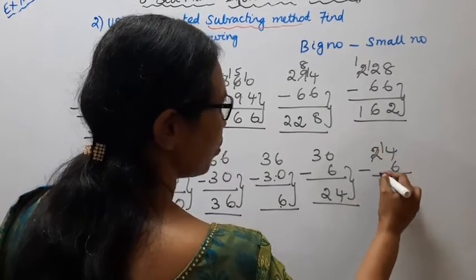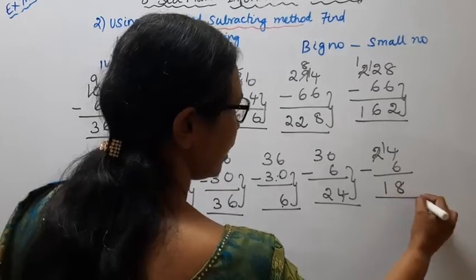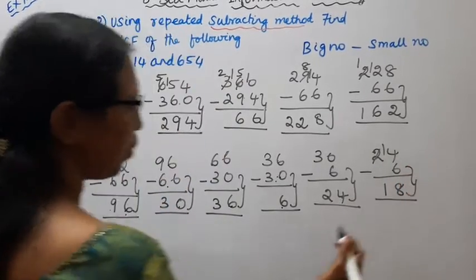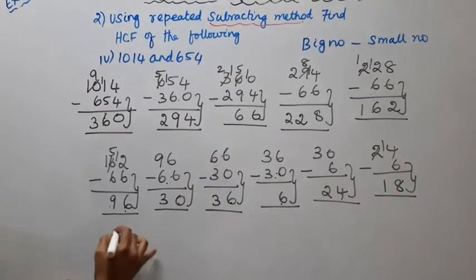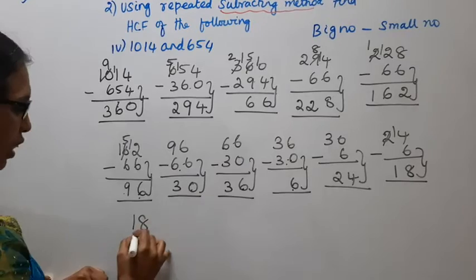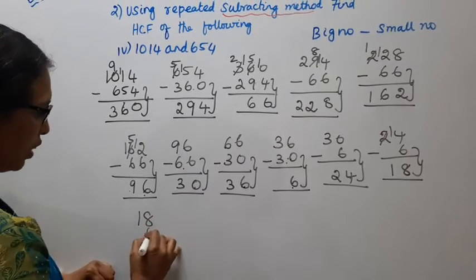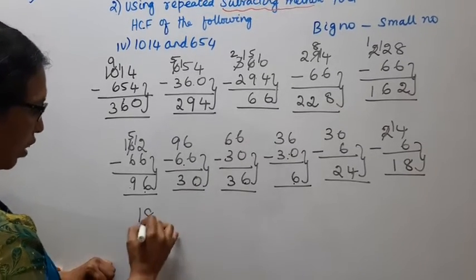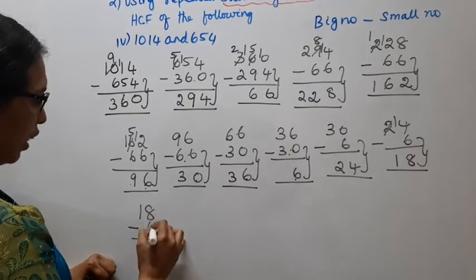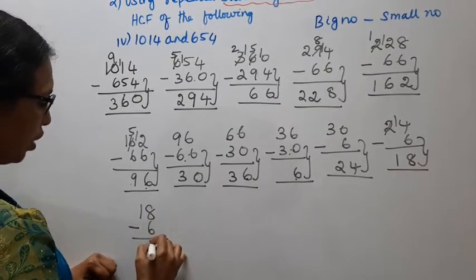Now we will do this. 18 — the number is 6. 8 — the number is 6.